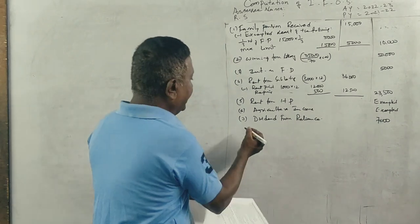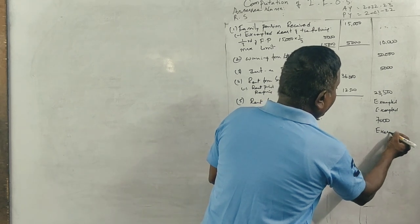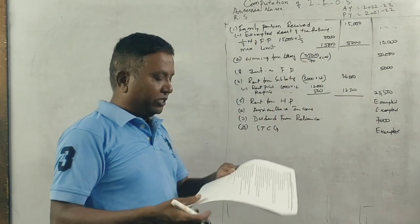Short term capital gain. Short term capital gain exempted because it is taxable under the head capital gains but not from the other sources.